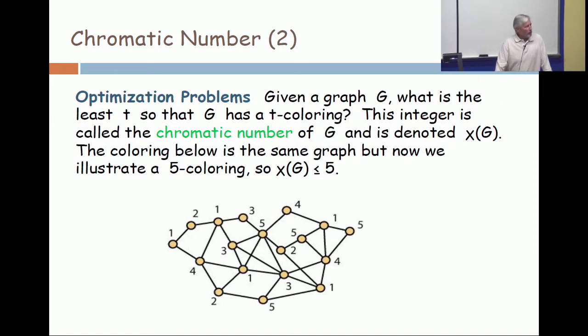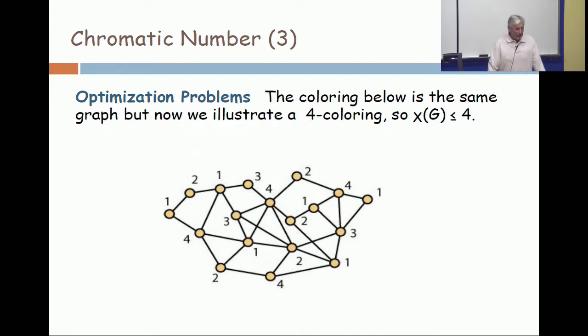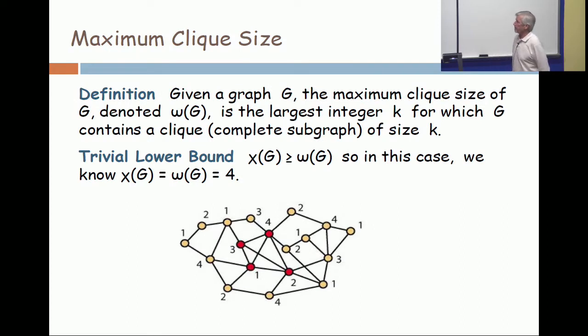The notion of chromatic number is what's the fewest number of colors for which there is a legal or proper coloring. Here's an improved coloring using only five colors. So we now know that the chromatic number of this graph is at most five. But we can ask the optimization problem: what's the least number of colors? For the graph I've been using in these illustrations, here is a coloring using four colors, and that's clearly the best that one can do.